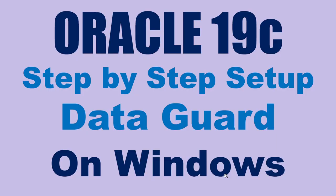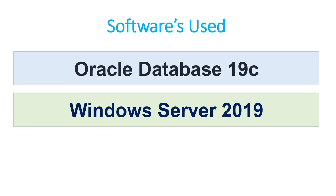Hello all. In this particular tutorial, we will learn how to set up Oracle Data Guard on a Windows environment. This tutorial has been done on Oracle Database 19c and Windows Server 2019. You can also use Windows Server 2016. I have not tested this on 2022, however I have tested it on 2016 and 2019. You can also have one OS on 2016 and another on 2019 — so primary on 2016, standby on 2019. That is fine.